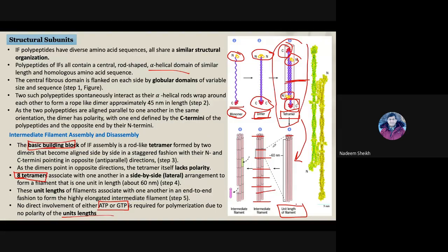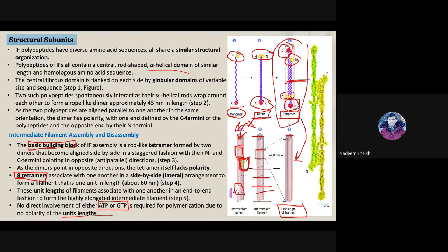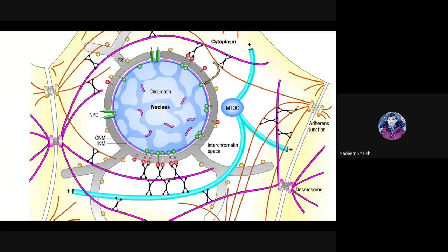It was found that newly added proteins were not adding at the end of the molecule as is normally seen in microtubule polymerization. Instead, the labeled proteins incorporated themselves in the middle of the molecule. This gave the idea that intermediate filaments are not static but are dynamic structures, and their tetrameric subunits can be replaced within the cell as and when required.